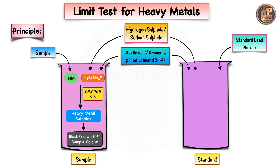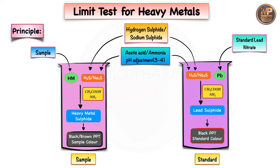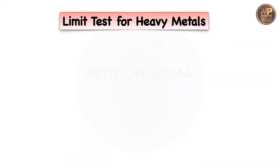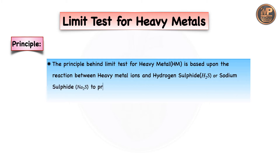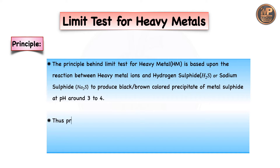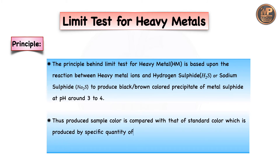In the sample cylinder, heavy metals react with hydrogen sulfide or sodium sulfide to produce heavy metal sulfide, giving a black-brown precipitate called the sample color. In the standard cylinder, lead from lead nitrate reacts with hydrogen sulfide or sodium sulfide to produce lead sulfide, giving a black color precipitate called the standard color. These two colors are then compared.